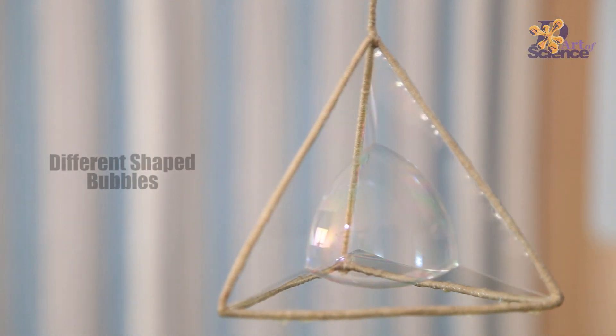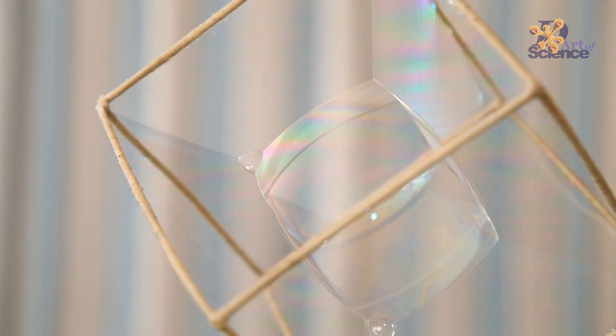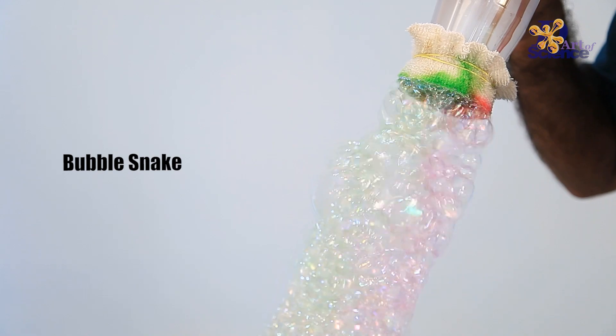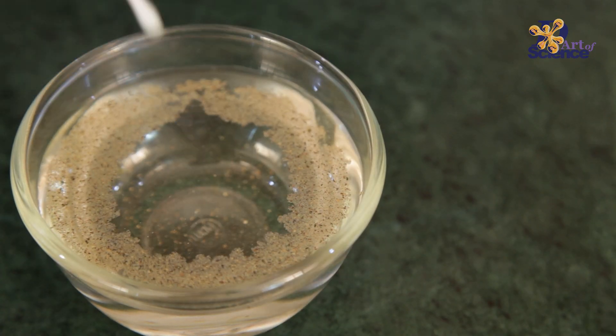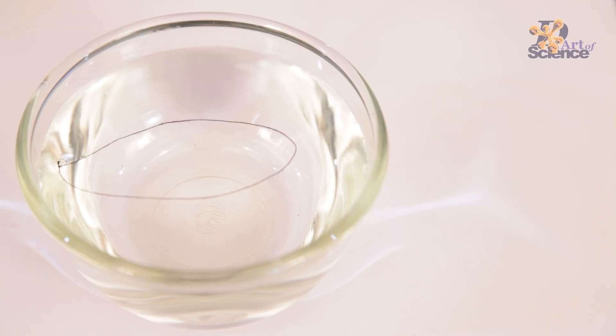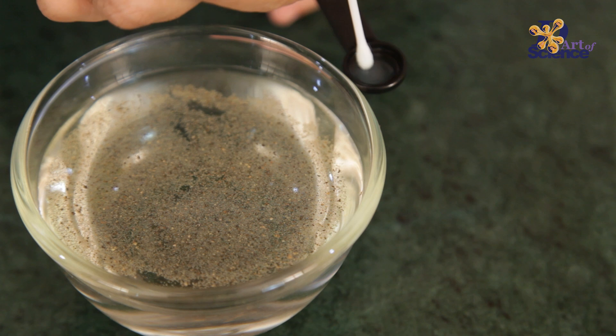You can use this hack to make differently shaped bubbles and bubble snakes too. I have linked the videos up here. Here's another really cool thing that you can do with surface tension. The common thing in all these experiments is the Q-tip dipped in soap.